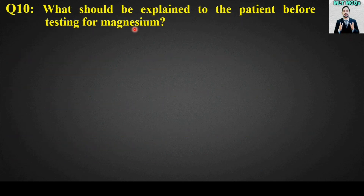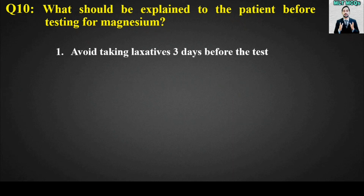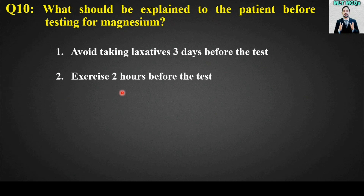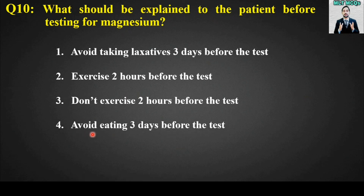MCQ number ten: What should be explained to the patient before testing for magnesium? Options are: avoid taking laxatives three days before the test, exercise two hours before the test, don't exercise two hours before the test, or avoid eating three days before the test. The right answer is option number one — explain to the patient to avoid taking laxatives three days before the test. Laxatives are medicines used to relieve constipation and loosen stool.